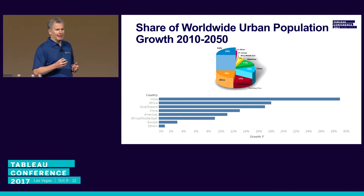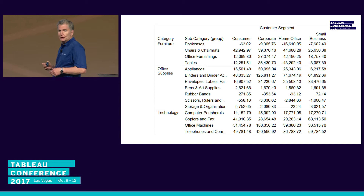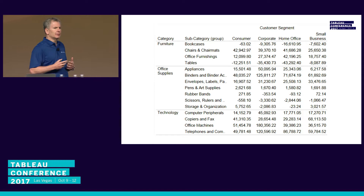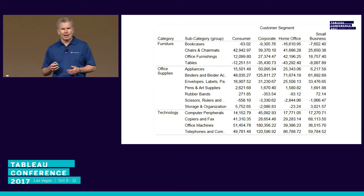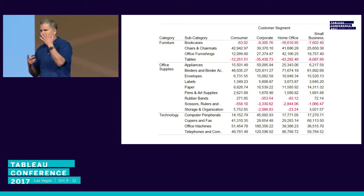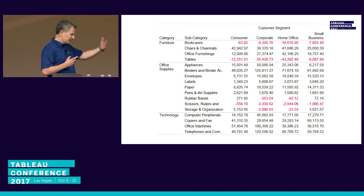Here's something probably nearer and dearer to all of you: the cross-tab report. There are times when you want to deliver something like this, like if you need an exact number. But if I asked you which subcategory is the least profitable, you could grind it out but it's not easy. If I take anything negative and make it red, it's better — there are fewer things your brain has to scan — but you still have to do some arithmetic and put things in your memory.